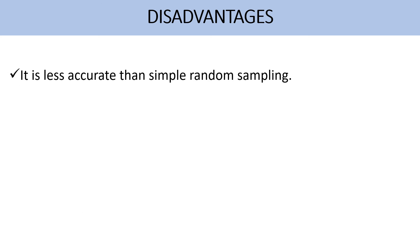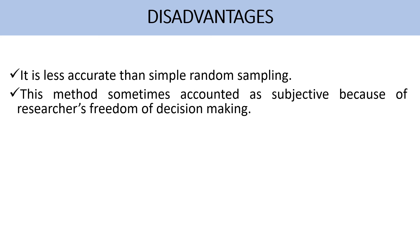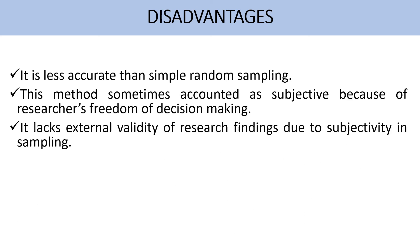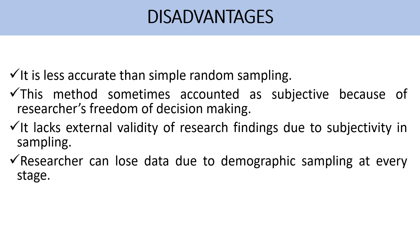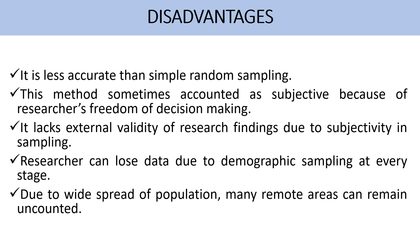There are few disadvantages also. It is less accurate than simple random sampling. This method is sometimes considered subjective because of the researcher's freedom of decision making. It lacks external validity of research findings due to subjectivity in sampling. The researcher can lose data due to demographic sampling at every stage. Due to the wide spread of population, many remote areas can remain uncounted.